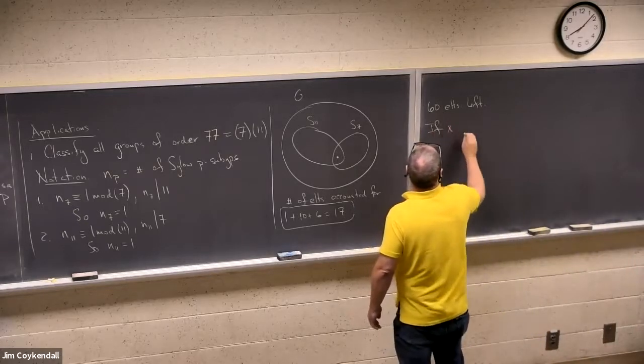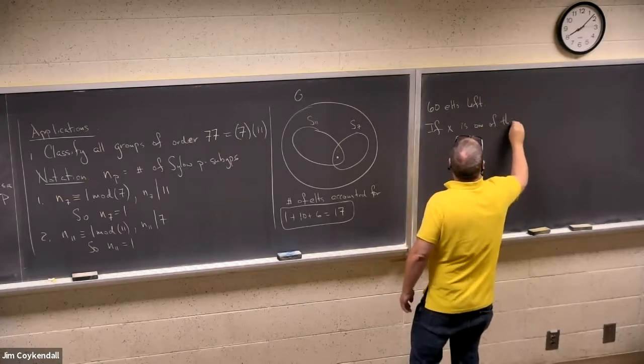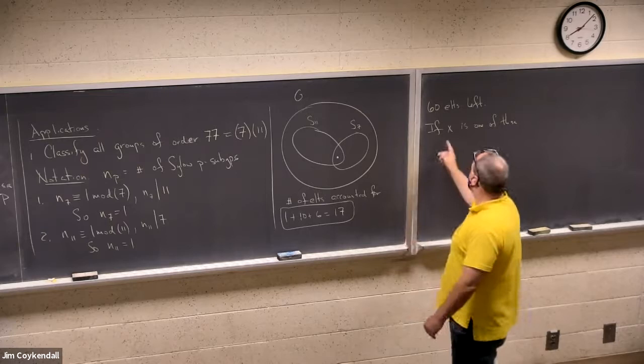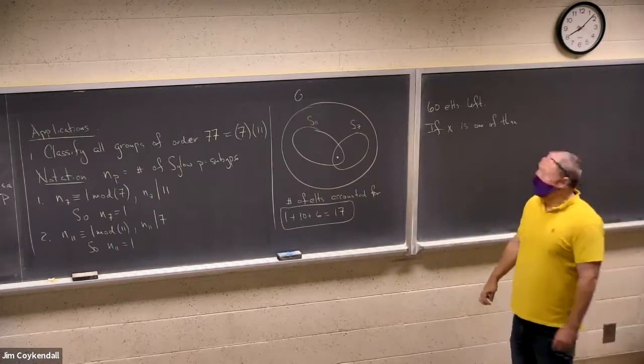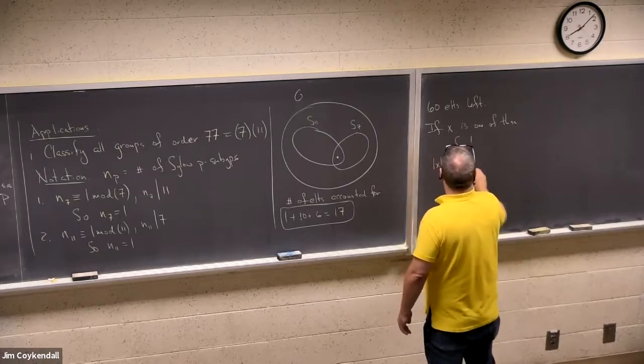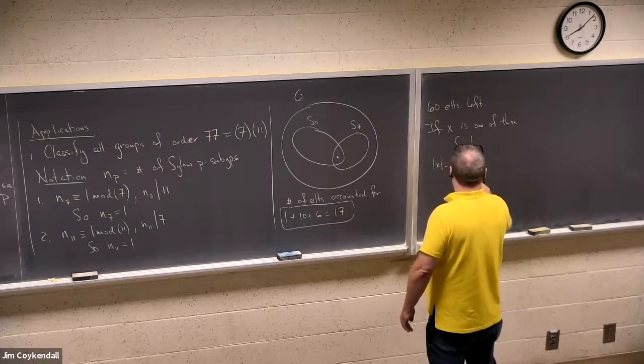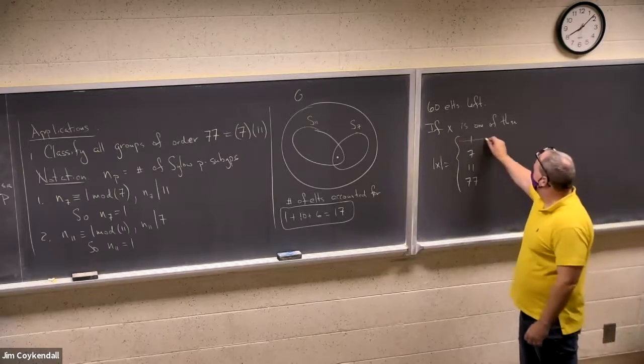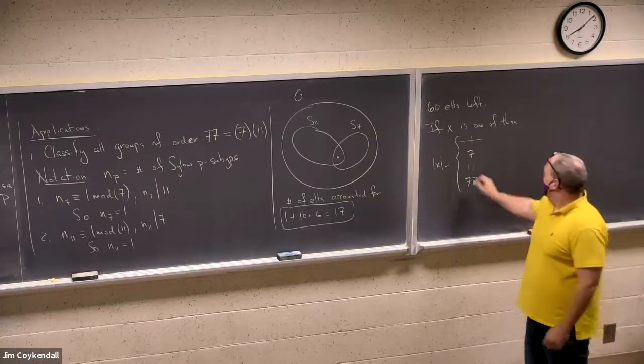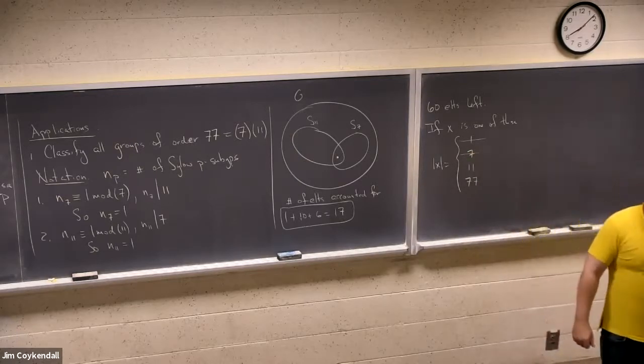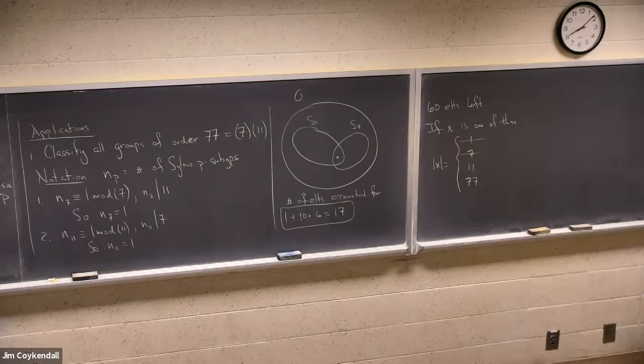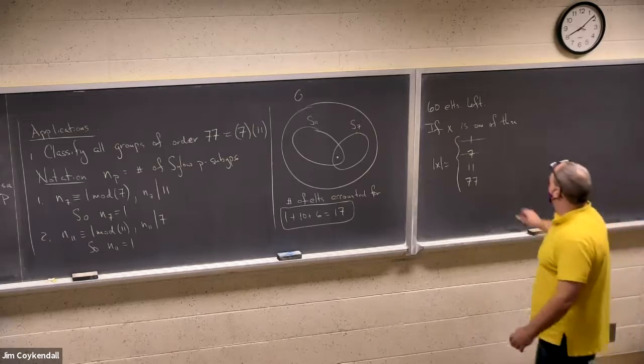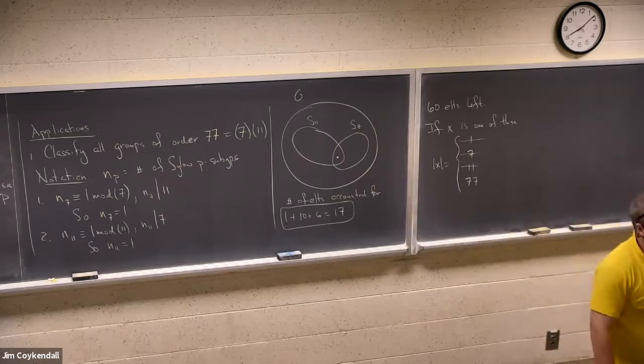Well, I don't know much, but I know that this is an element of a group of order 77. So the order of X must be 1, 7, 11, or 77. But it can't be 1 because we've already counted the identity. It can't be 7, because if it were 7, it would generate a Sylow 7 subgroup, and there's only one of them, so I've already counted it. It can't be 11, because again, it's an element of order 11, so it's contained in the Sylow 11 group, and I've already counted all of them.